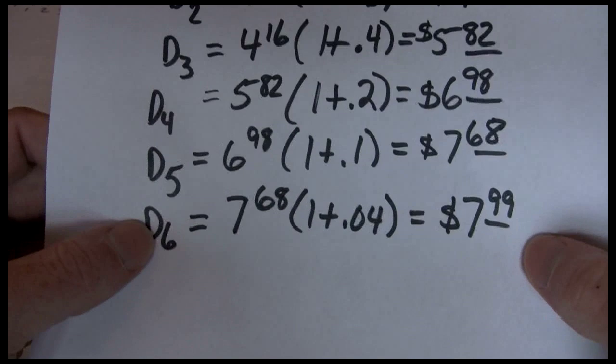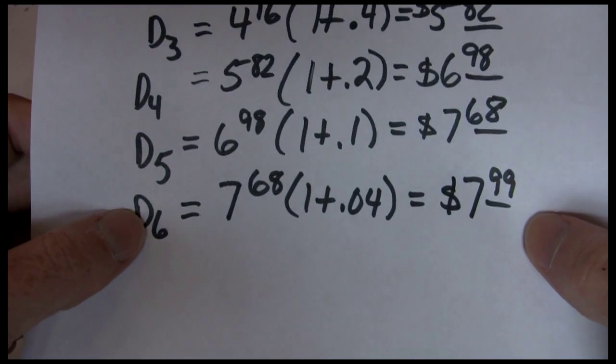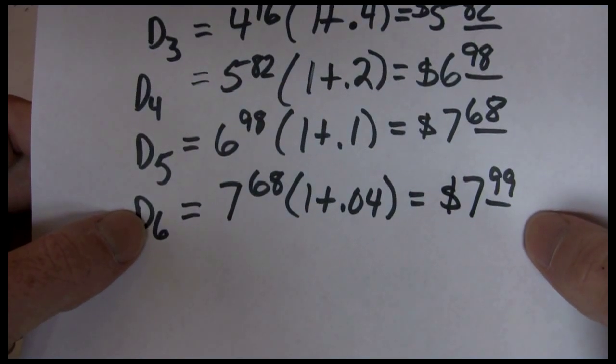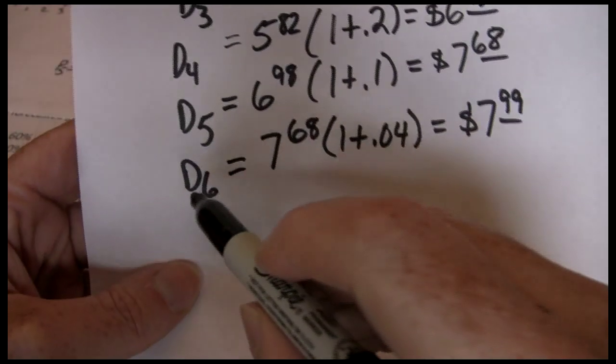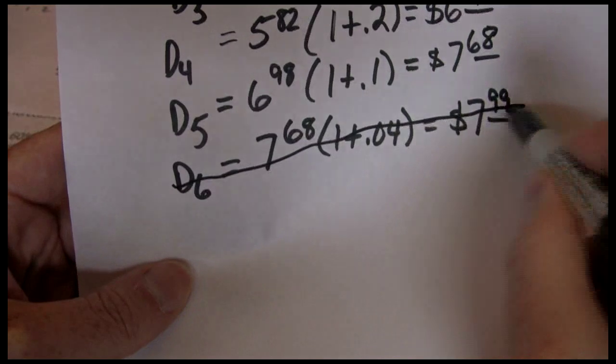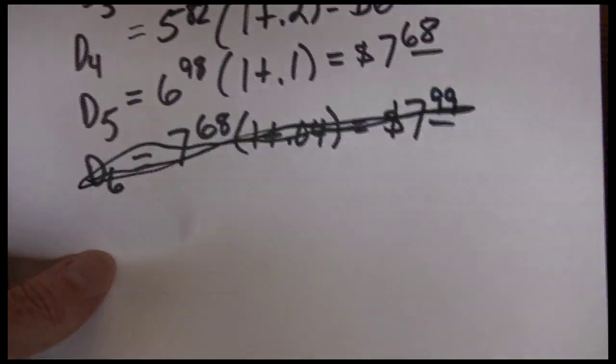Dividend year five was $7.68. We don't have to worry about dividend year six anymore because that's already included in the constant growth pricing model we did in step two. So we're done with that.